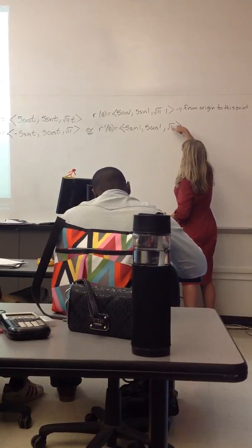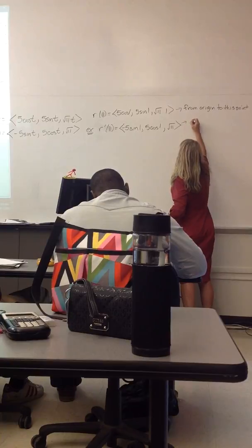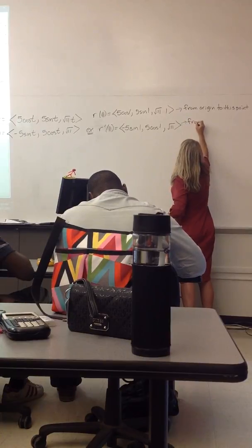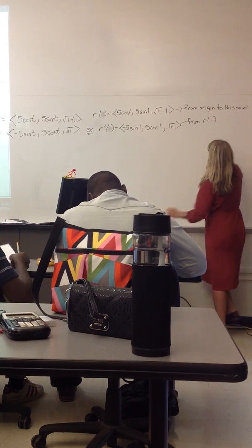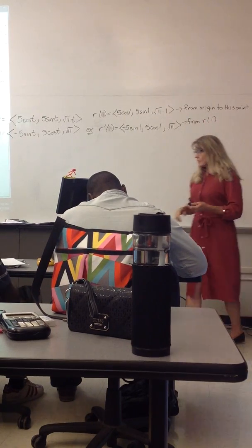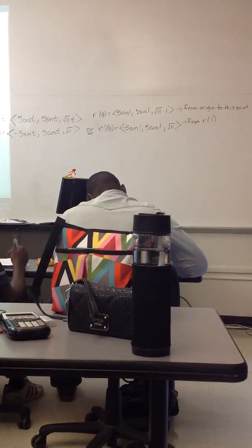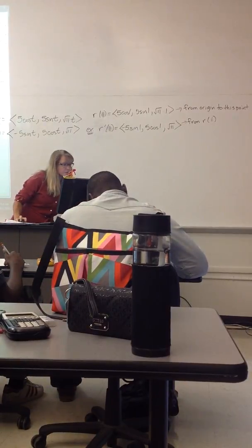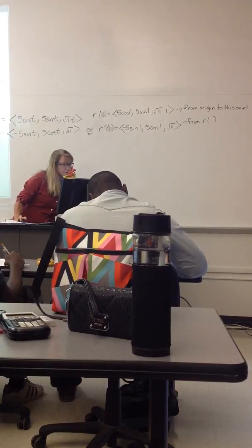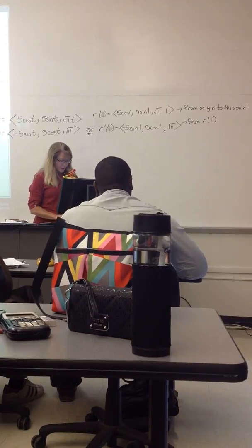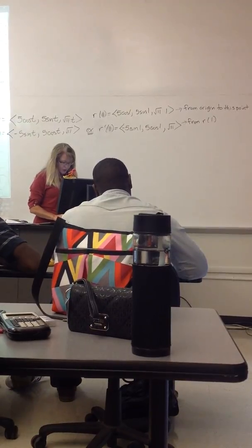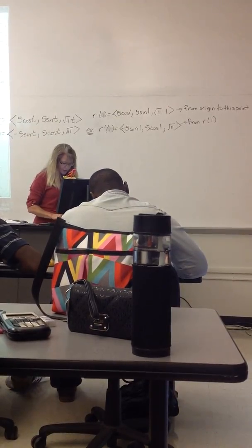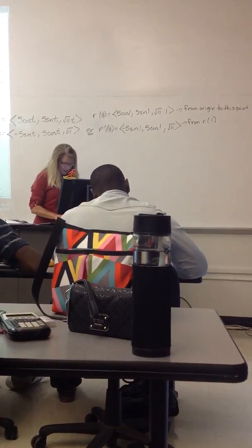But then this vector, you want to think of its initial point as from r of 1. So if we were graphing both of those, first I'm graphing r of 1, so 5 cosine of 1, 5 sine of 1, and then square root of 11 times 1 is still square root of 11.